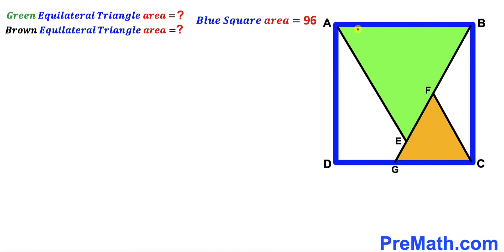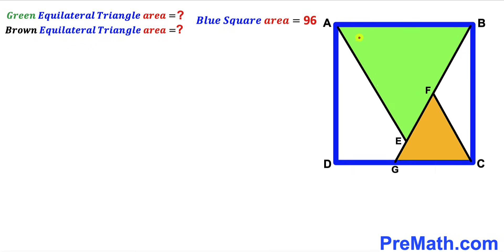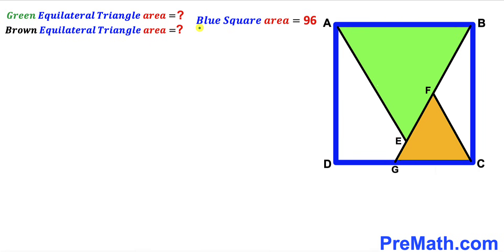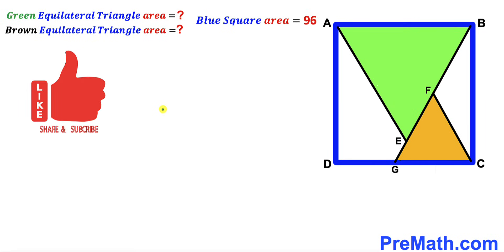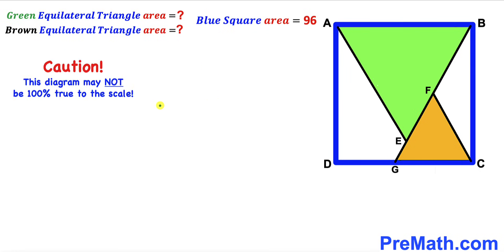Welcome to PreMath. In this video we have a green shaded equilateral triangle and a brown shaded equilateral triangle, both fully confined in a blue square ABCD. The area of this blue square ABCD has been given to us as 96 square units, and our task is to calculate the area of the green shaded equilateral triangle and the area of the brown shaded equilateral triangle as well. Note that this figure may not be 100% true to scale.